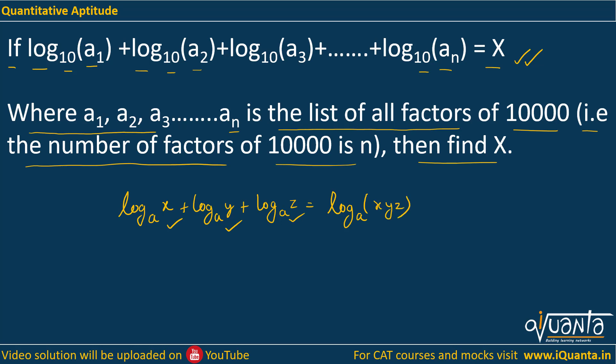If we apply this property to our equation, we can take log base 10 common, and then everything inside—a₁, a₂, a₃, and so on—will be multiplied together. So we get log₁₀(a₁·a₂·a₃·...·aₙ) = X.